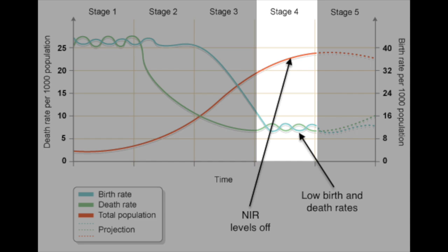Our last stage we're going to look at is stage four. Looking at the graphic, we see that the crude death rate has leveled off and the crude birth rate has crashed down to be even with it, so we have zero NIR. Most MDCs are in this stage right here and they don't see much growth happening.